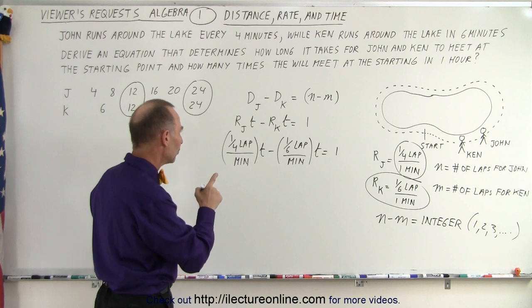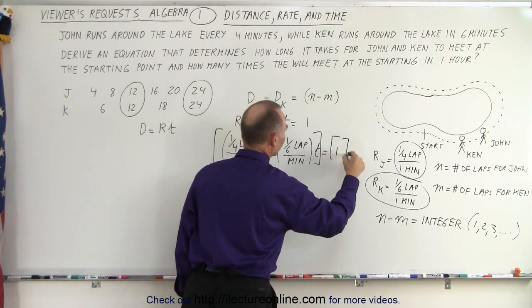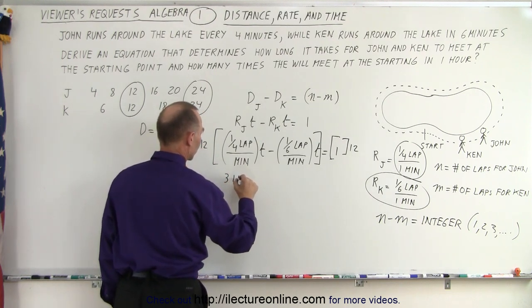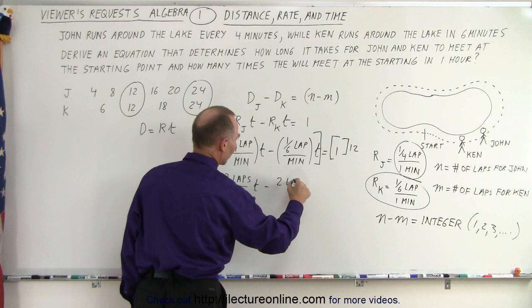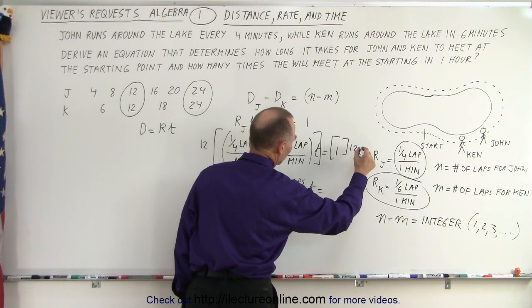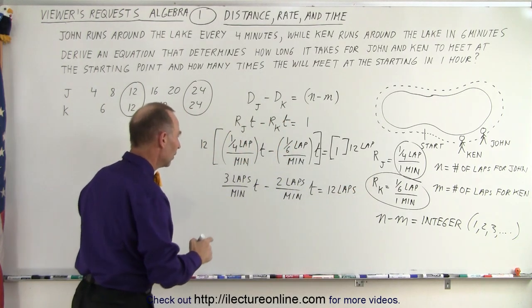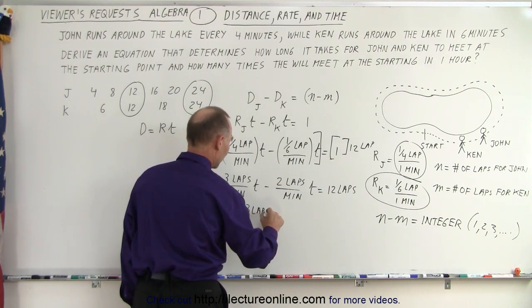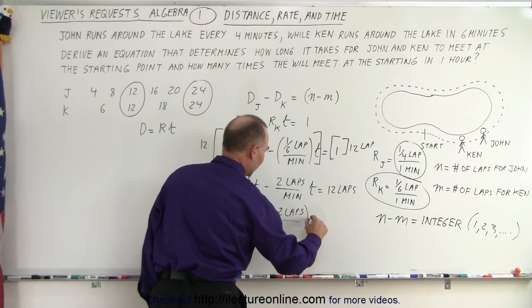We must multiply everything by 12 to get rid of the fractions, so we multiply the left side by 12 and the right side by 12. Which means three laps per minute times T minus two laps per minute times T equals 12 laps. We can factor out a T, so we have T times three laps minus two laps per minute, because we can write over a common denominator of minutes, equals 12 laps.